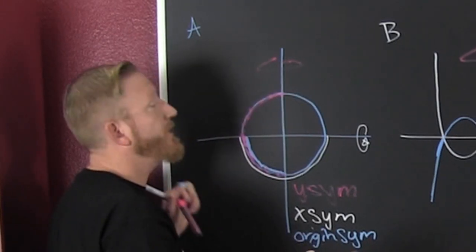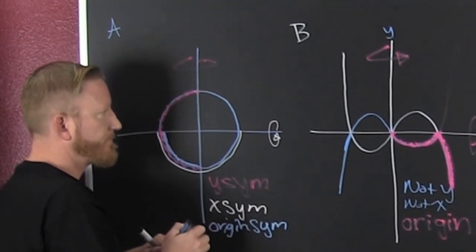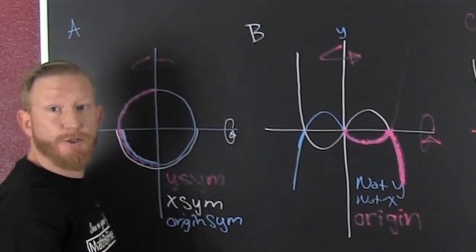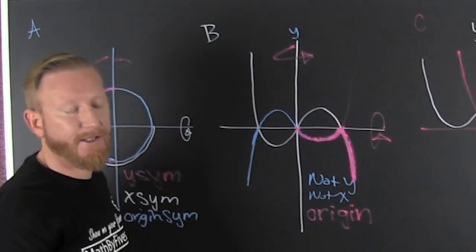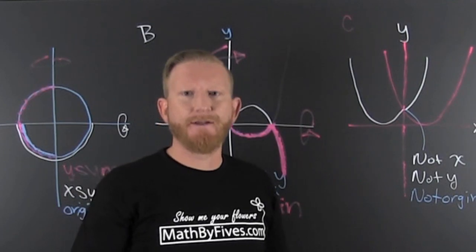That's all three. And we can see visually, graphically, whether or not something is symmetric.